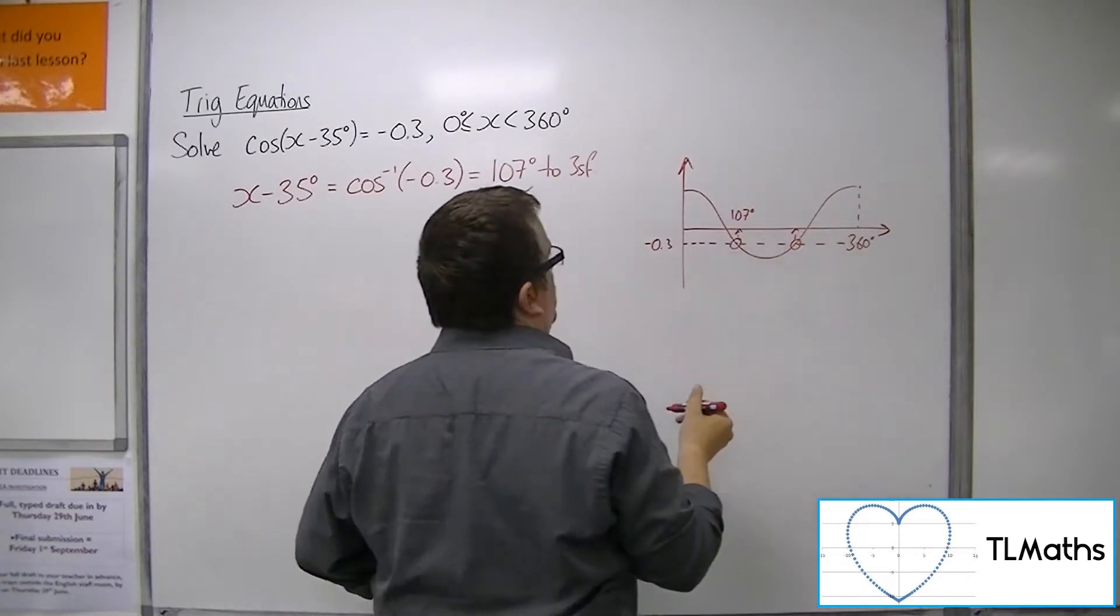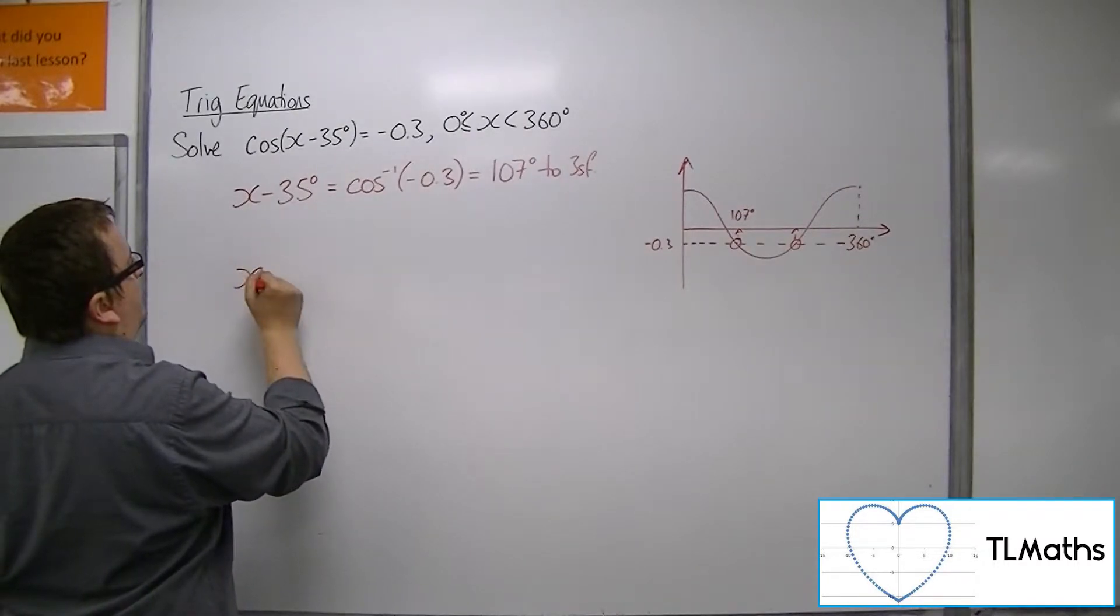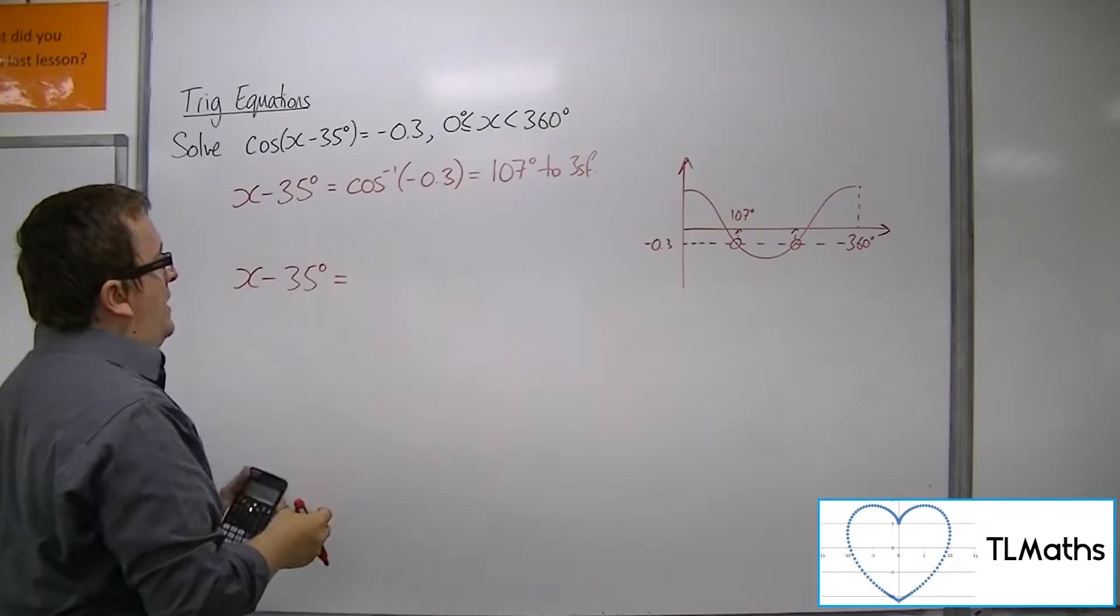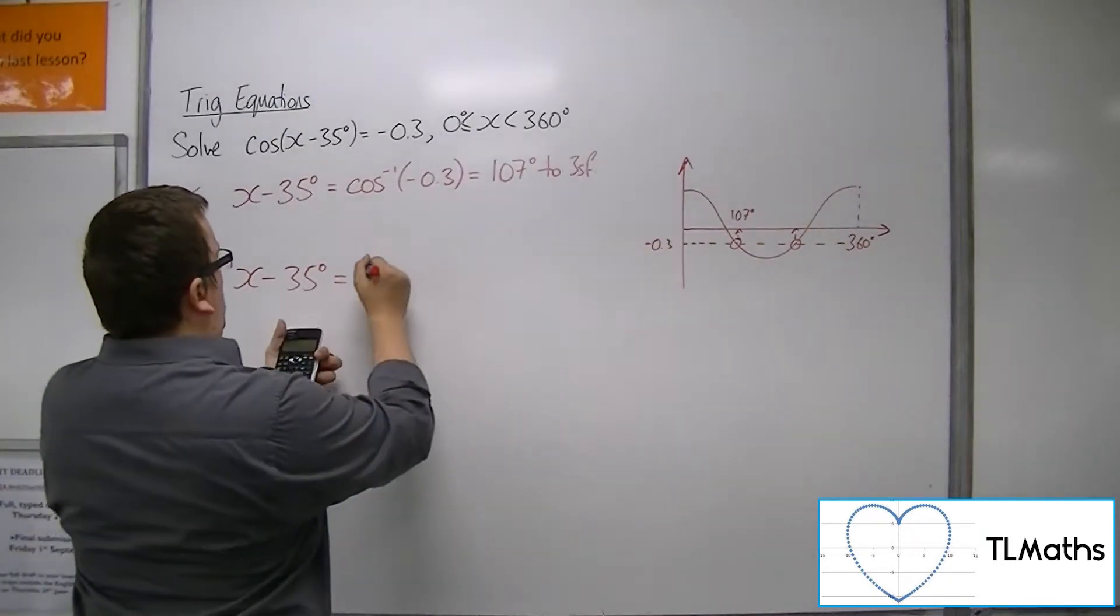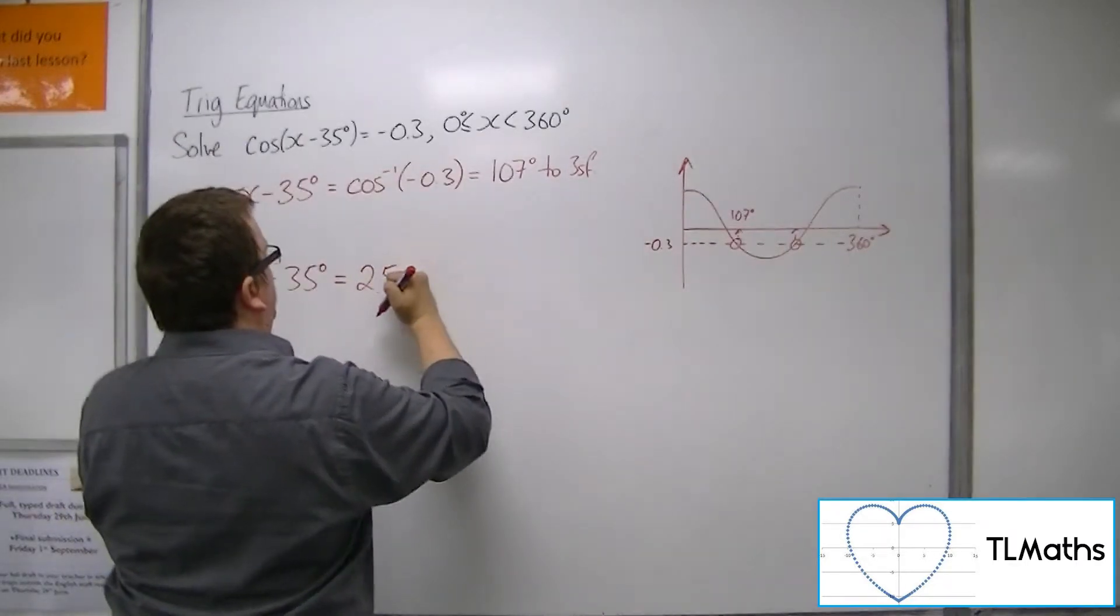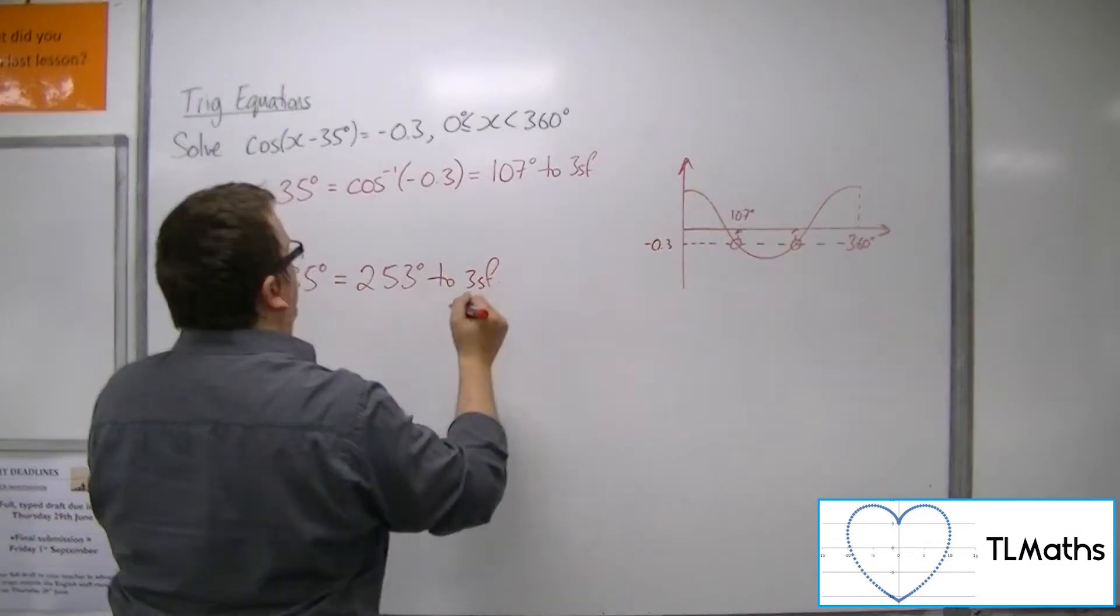Now there's a second solution, which we gain from 360 minus 107. So 360 take away the 107 is 253 degrees to 3 significant figures.